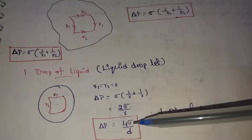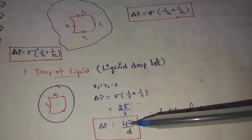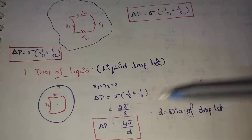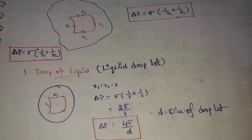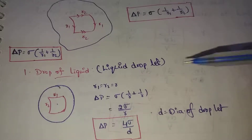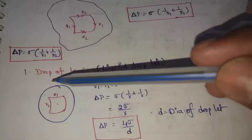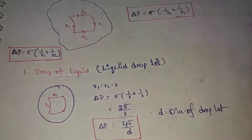Delta P equals 4 sigma by D. Here, D is the diameter of the droplet.